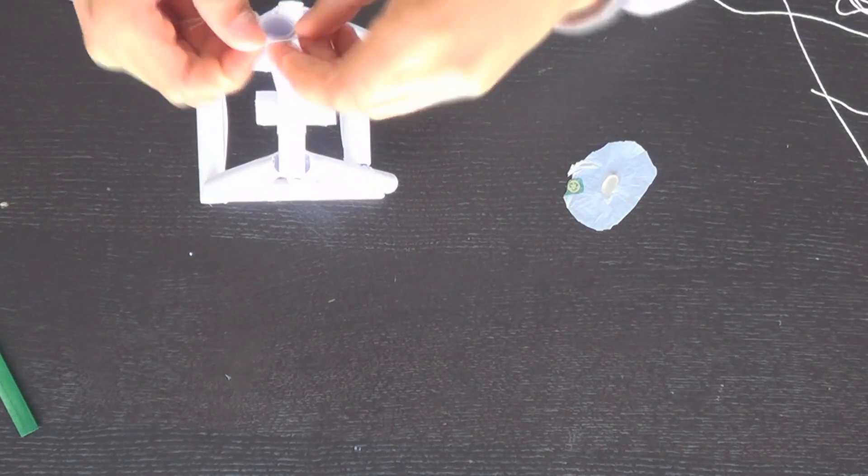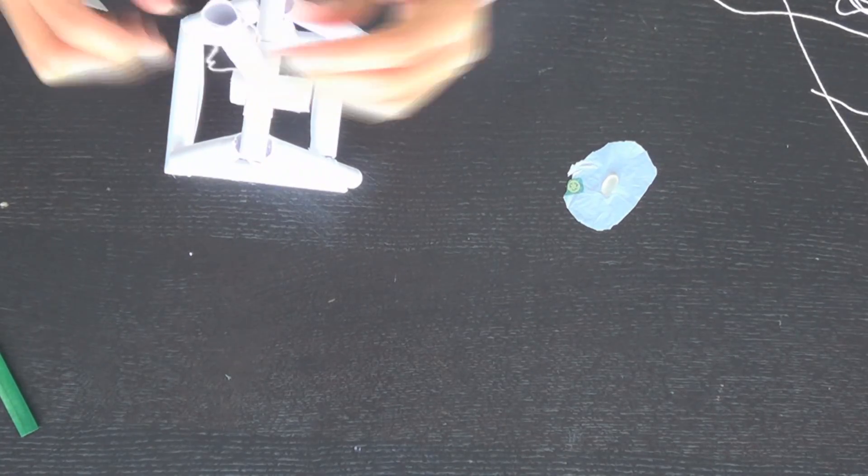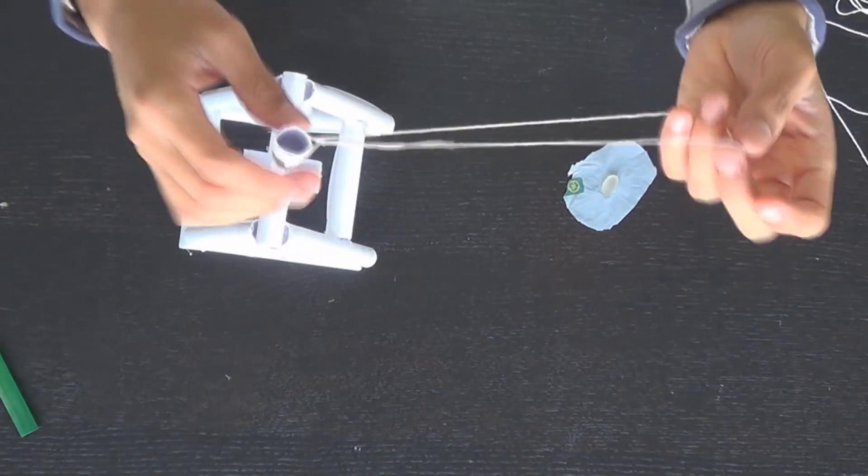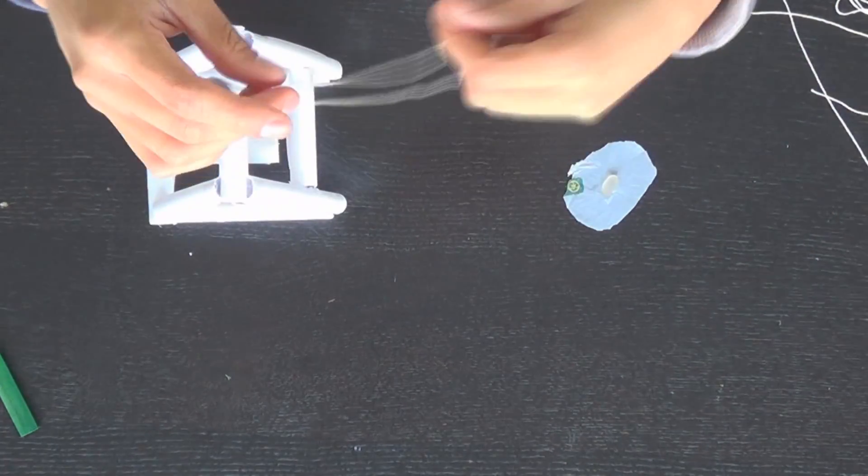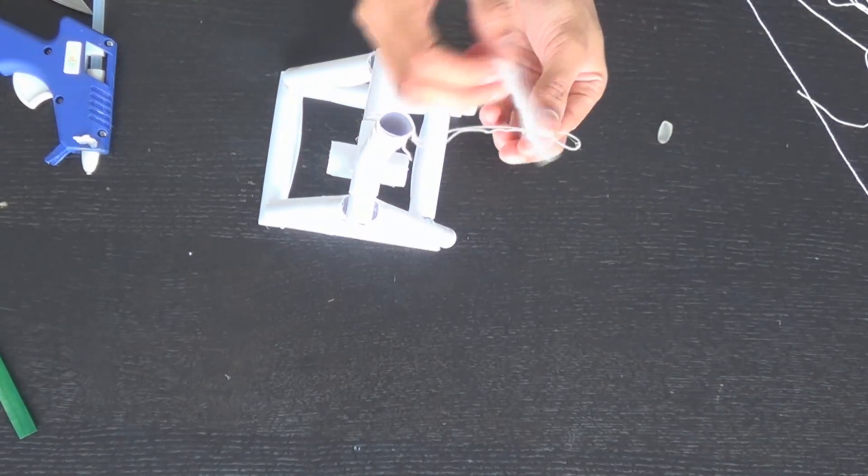Now we're going to tie a loop so that it slides over the end of the arm, and can slide off easily. To finish it off,